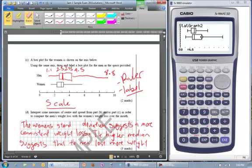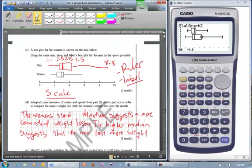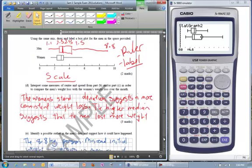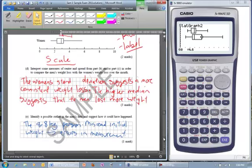Interpret some of the measures of centre for the distribution for part B. Compare the men and women. So let's have a look at some stuff. The standard deviation: the women's standard deviation suggests that there is more consistent weight loss, because it is smaller.